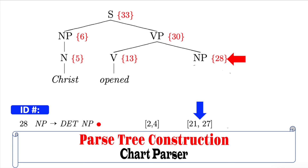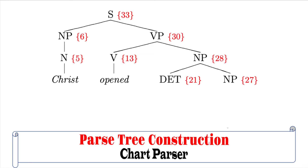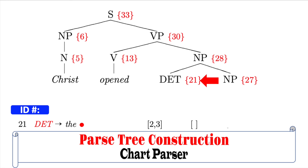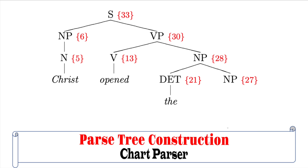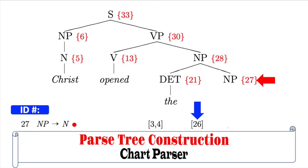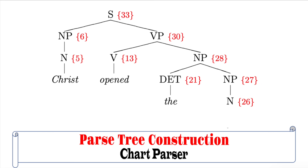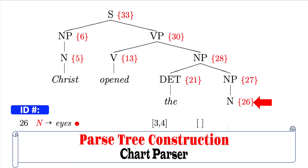NP has ID number 28, which has the production NP derived from ID number 27. NP was completed in ID number 27. ID number 21 tells us that DET derives 'the' was found in the production rules. ID number 26 tells us that N derives 'eyes' was found in the production rules.